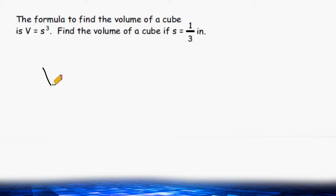So they give us the formula to find the volume of a cube, which is equal to the length of one of the cube's sides to the third power. And for this cube, it says that the length of the side is one-third of an inch. So we have to take one-third and raise that to the third power.